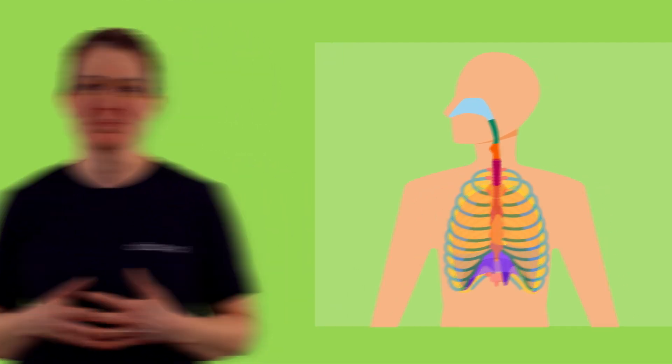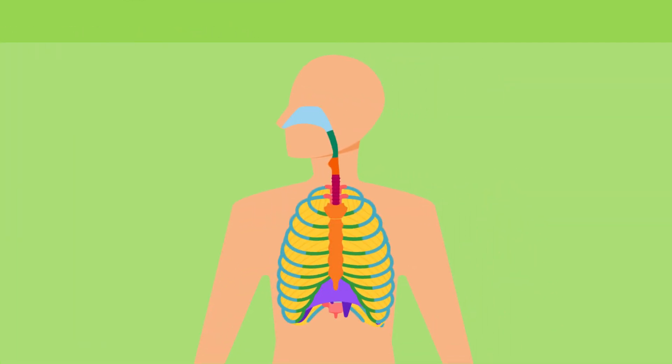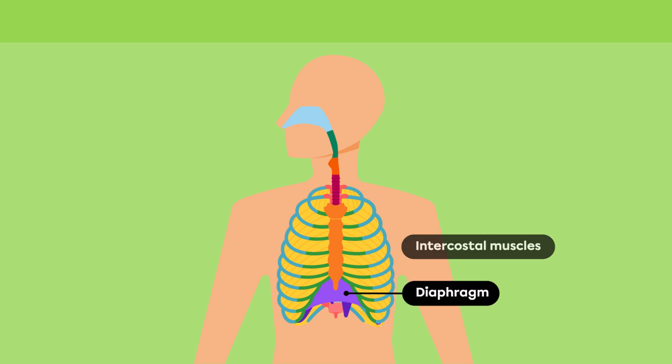Respiratory movements enable air to pass from the airways to the lungs and vice versa. This allows the cells to obtain oxygen and get rid of carbon dioxide. The main parts of the body involved in respiratory movements are the diaphragm and the intercostal muscles.